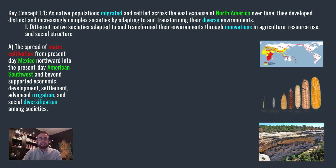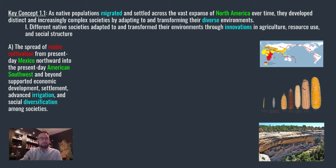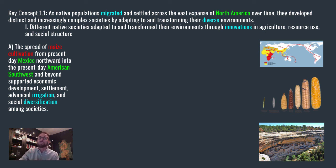Our very first key concept — you can see it at the top — works with more specific details below on the bottom left, which I'll call the descriptor. It's outlining what extra details will appear in the notes to the right. The first descriptor says: the spread of maize cultivation from present-day Mexico northward into the present-day American Southwest and beyond supported economic development, settlement, advanced irrigation, and social diversification among societies.